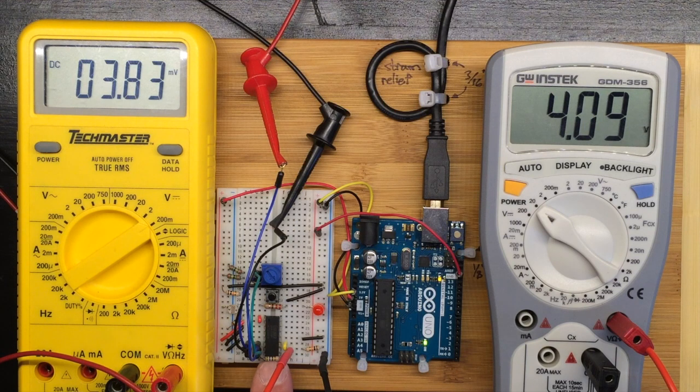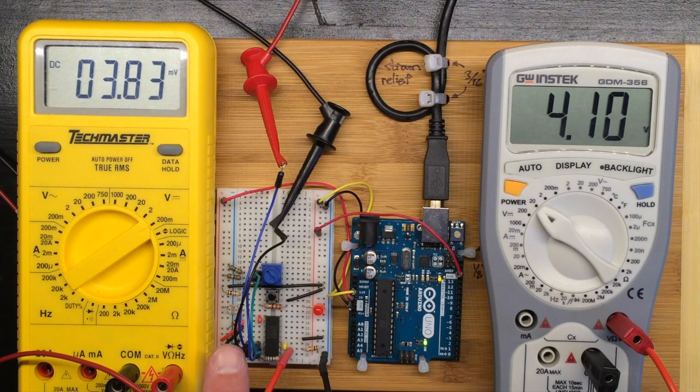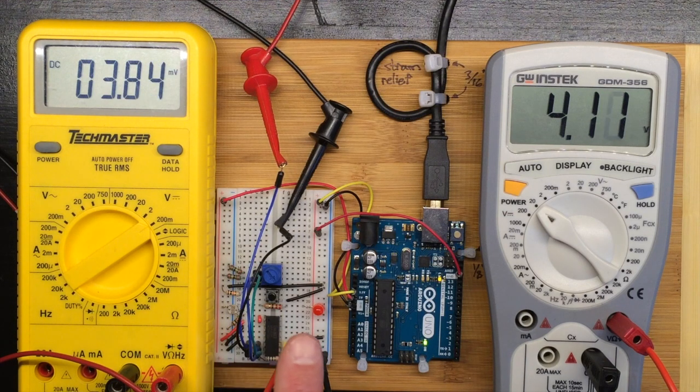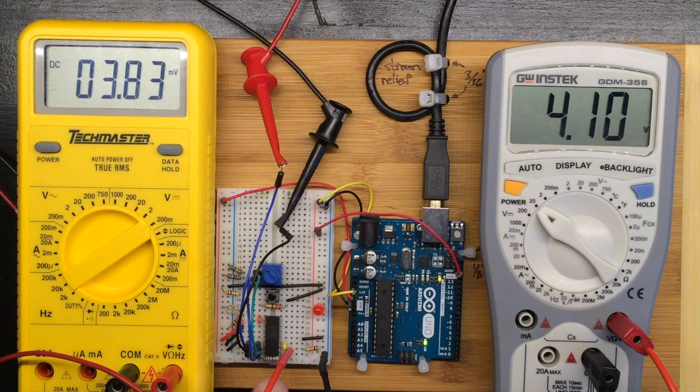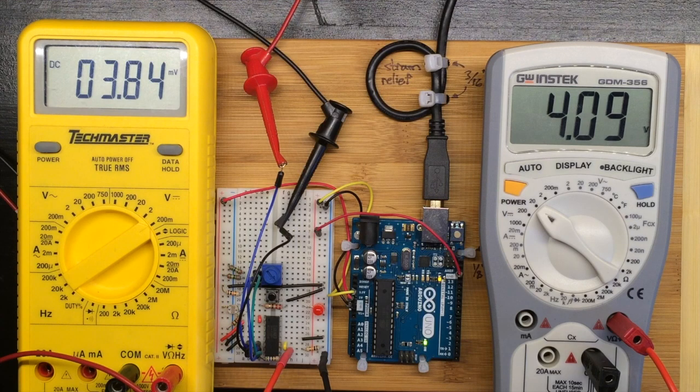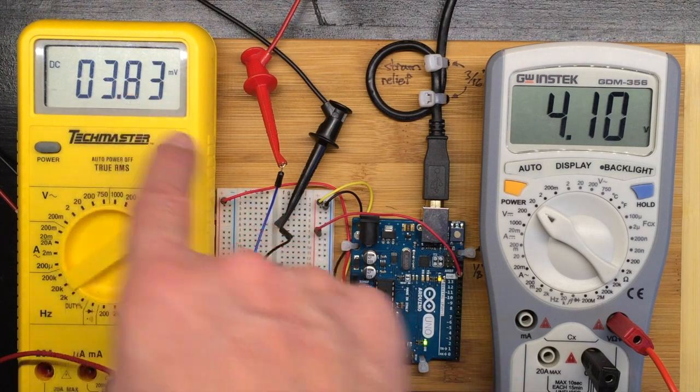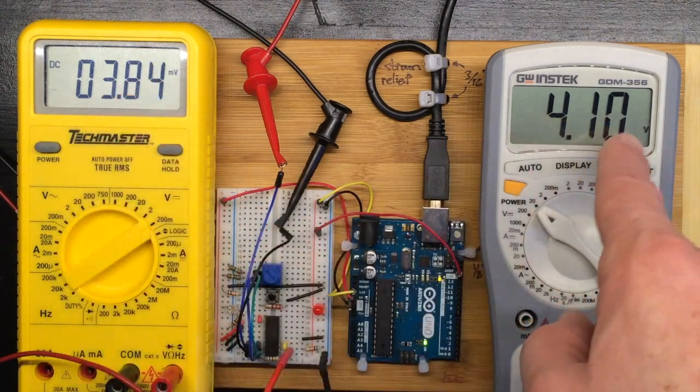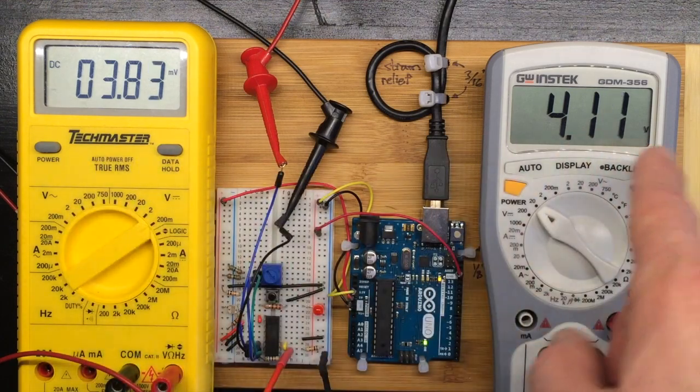This gain resistor here, which is a 56 ohm resistor in this circuit, determines the gain, the amount by which the input signal is multiplied to get the output signal. With 56 ohms, that should be about 1,075 times, so way up from 3-ish millivolts to 3-ish volts, so an increase of more than 1,000.